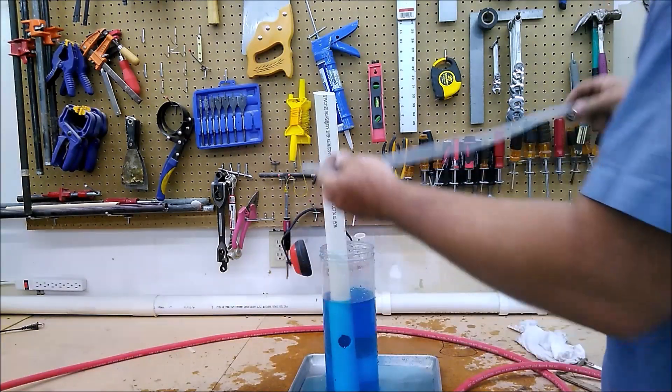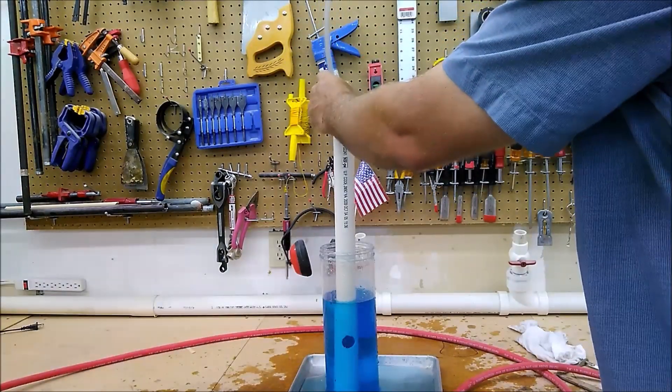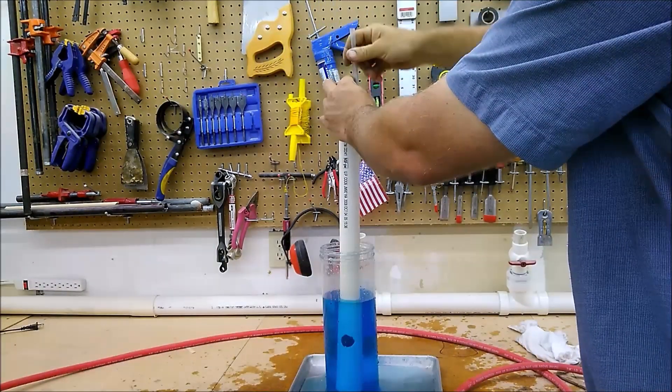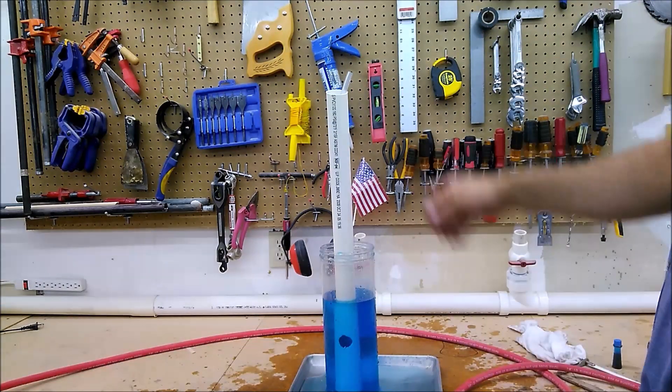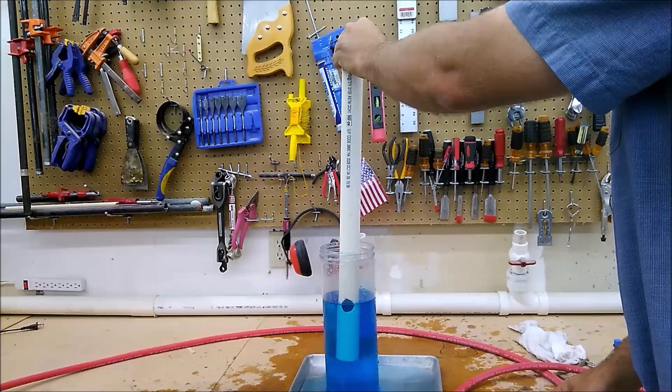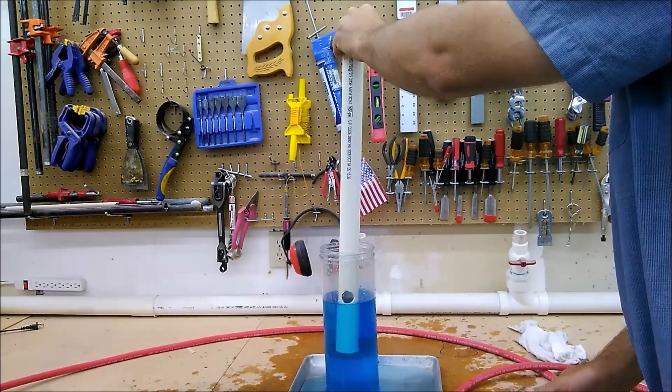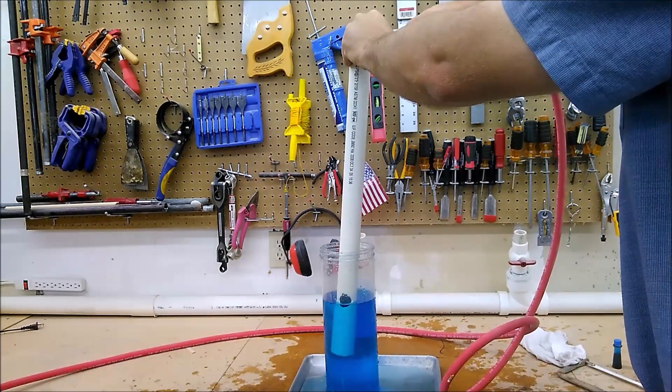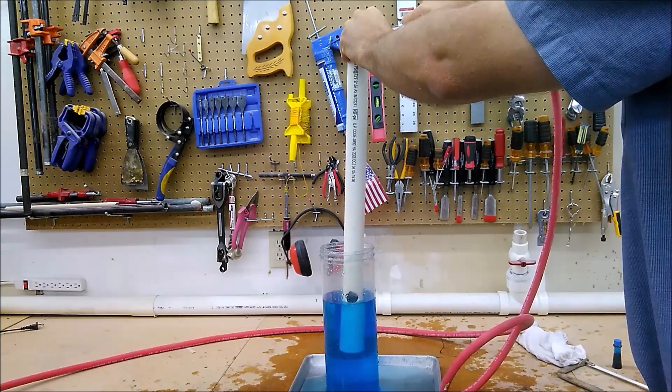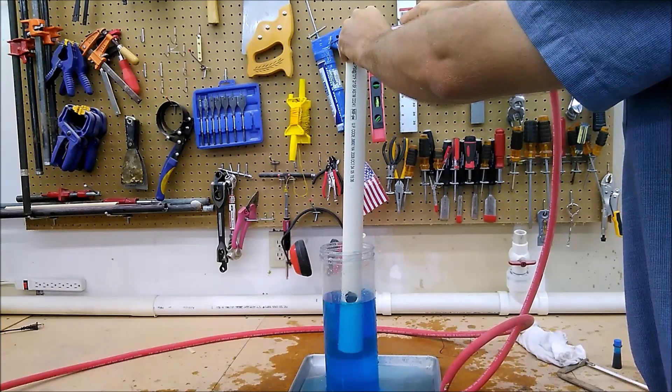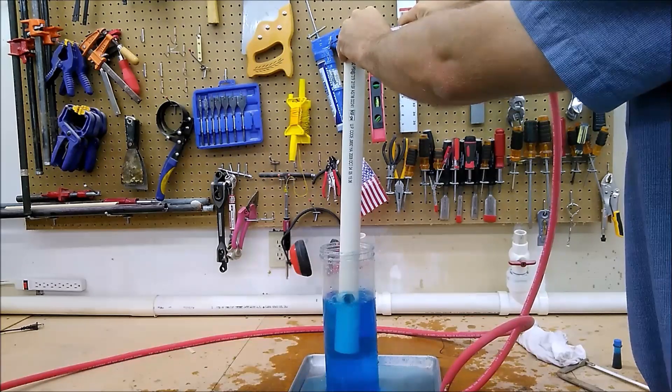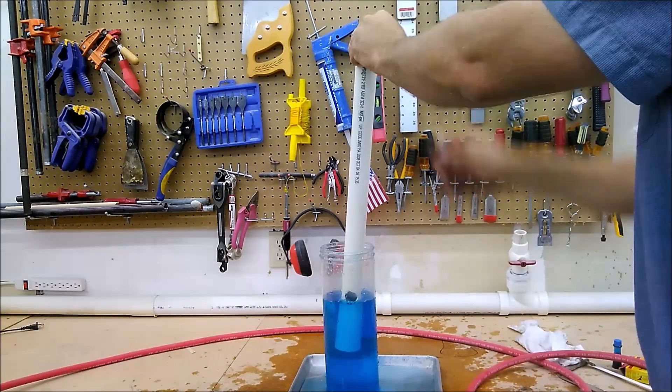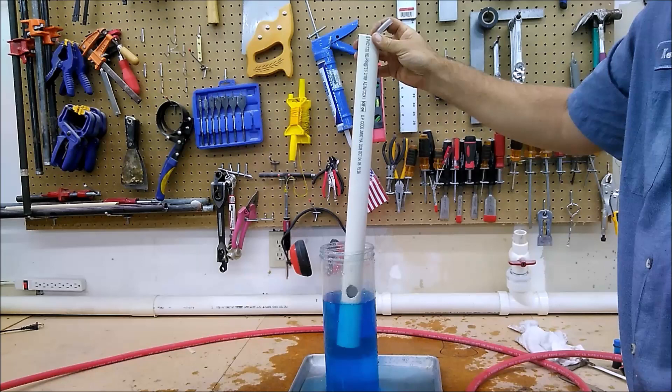In this case, you'd be running an airline down the inside of the casing to the bottom of the hole or somewhere in that neck of the woods. Now, if your perforations are up right to the water level, it makes sense that you're not going to get any water to come up the pipe because it's all just going to leave out through the perforations. Your water and air is just going to leave.